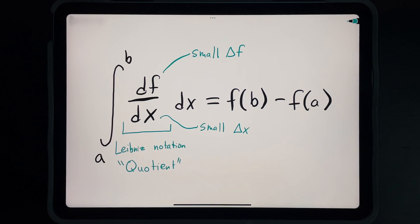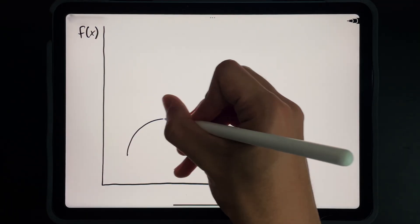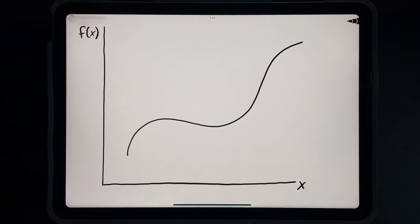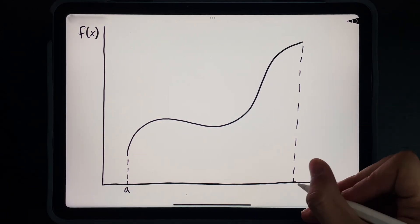Mathematically, derivatives are not actually quotients, but writing it this way can help us understand the geometric intuition behind this formula. Let's consider the graph of f versus x. Here, I just chose f to be a random curve that is both continuous and differentiable along the interval a comma b.